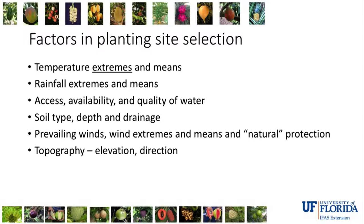Prevailing winds can be important, especially in areas with constant winds. Some trees do far better if protected from constant winds — they'll produce sooner, grow better, and recover better from flowering and fruiting. Wind extremes such as hurricanes and typhoons are also a concern, but you can prepare the trees before a storm hits. Natural protection from forests, planted windbreaks, or natural areas can help protect the crops.